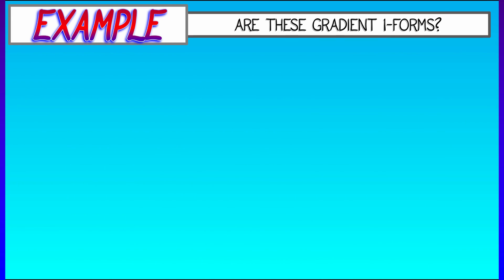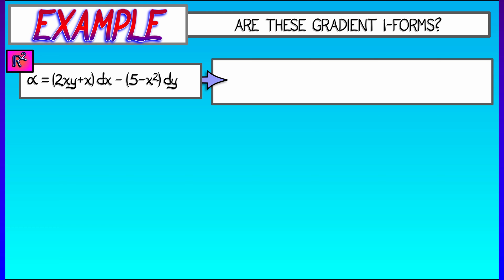Let's say that I start writing down some random one forms. Are these gradients? Let's say we start with alpha given by (2xy + x)dx - (5 - x²)dy. What I do is I take the first component and differentiate it with respect to the second variable. The partial with respect to y of (2xy + x) gives easily 2x. Next, I take the second component -(5 - x²), differentiate that with respect to x. That partial derivative is also 2x. That means that this is a gradient one form.